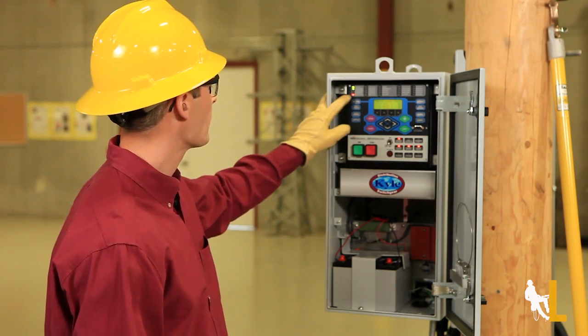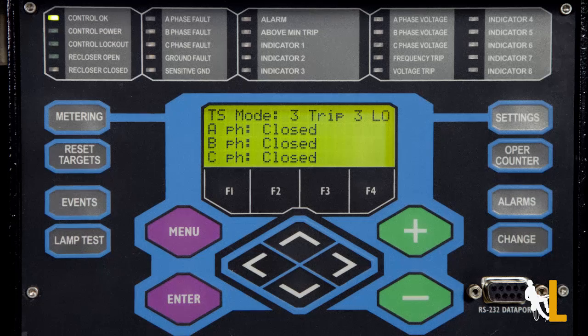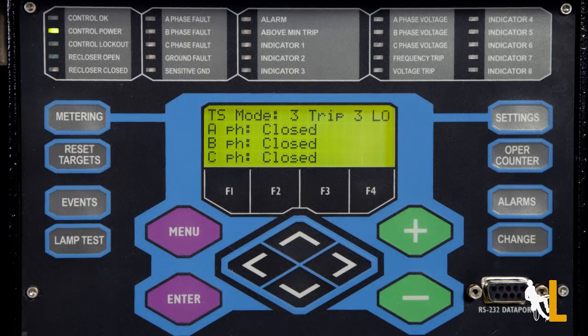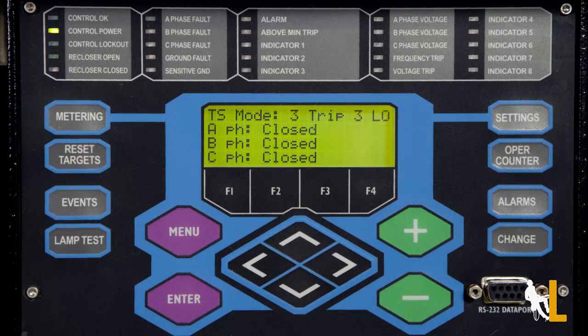Let's take a look at the top of the panel at the LEDs. Control OK means everything is operating properly. Control power indicates there is enough voltage for the recloser to trip.